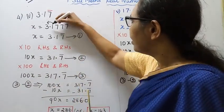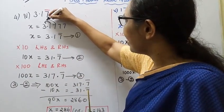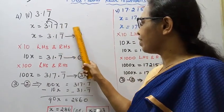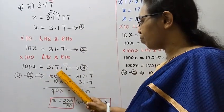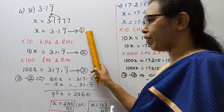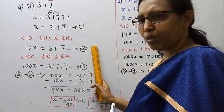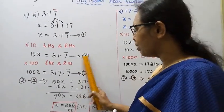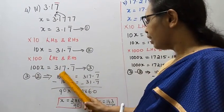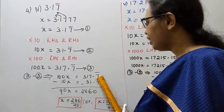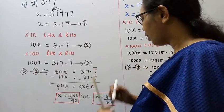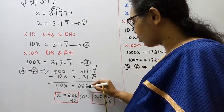Then where do you go? 100 multiply — two decimal, two zeros — into left hand side and right hand side. Then 100x equals 317.777... which is 317.7 bar. 100x minus 10x: the 7 bar cancels.